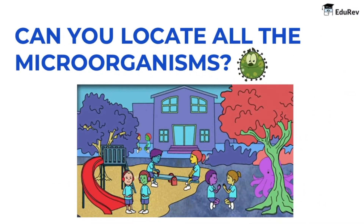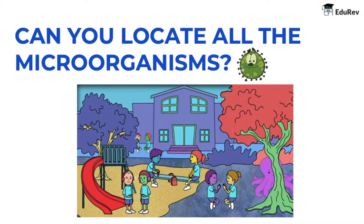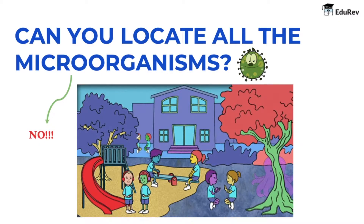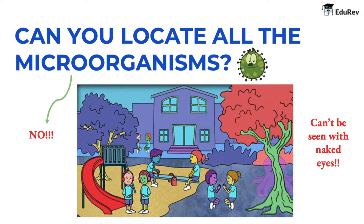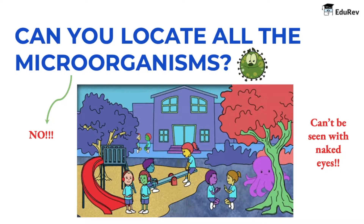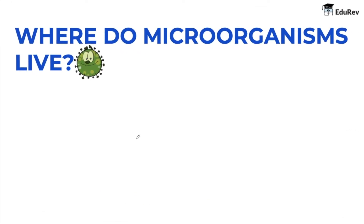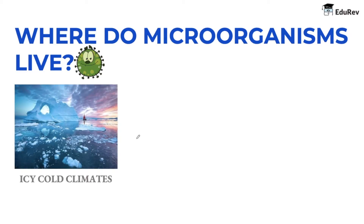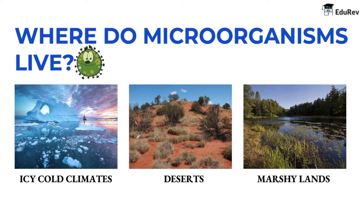Now, in this picture of a park, can you locate all the microorganisms present? The answer is no, you cannot, because microorganisms cannot be seen with the naked eye. Microbes can survive in all kinds of environments, from icy cold climates to hot springs — that is any kind of temperature — and from deserts to marshy lands, that is any level of humidity.